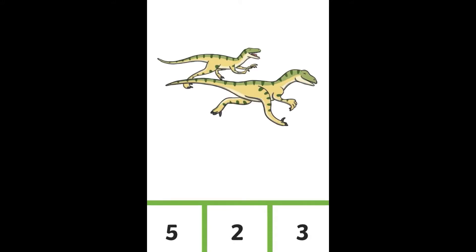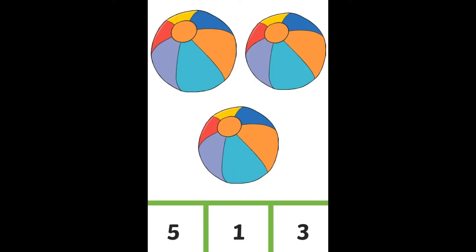How many dinosaurs? Five, two, or three? That's right, two. How many beach balls? Five, one, or three? That's right, three.